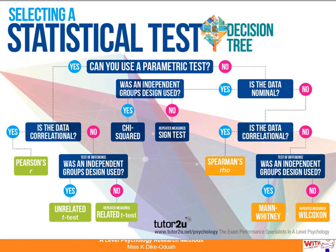Well done for drawing your statistical test decision tree. Have a look at it and compare it with the one on the screen and make any adjustments that you need to in red pen, so you can see the areas that you need to focus more on in terms of recall. Today we are focused on the chi-square test, so I'm just going to grab a pen and circle the chi-square test on our decision tree.